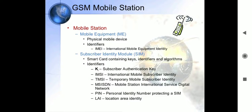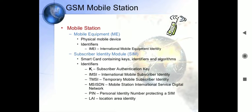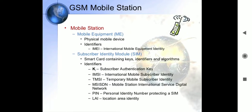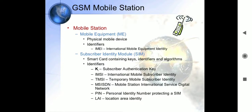Further GSM characteristics include: 8 full rate or 16 half rate TDMA channels per carrier; user terminal authentication for fraud control; encryption of speech and data transmission over the radio path; full international roaming capacity; low-speed data services up to 9.6 kbps; compatibility with ISDN for supplementary services; and support of Short Message Services (SMS).